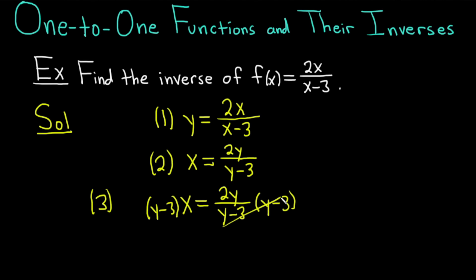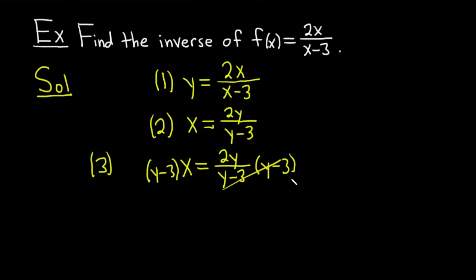And over here we also have y minus 3. On the right-hand side, these cancel. They're gone. And on the left-hand side, we can distribute the x. So we get y times x, then minus 3 times x. And that's equal to 2y.